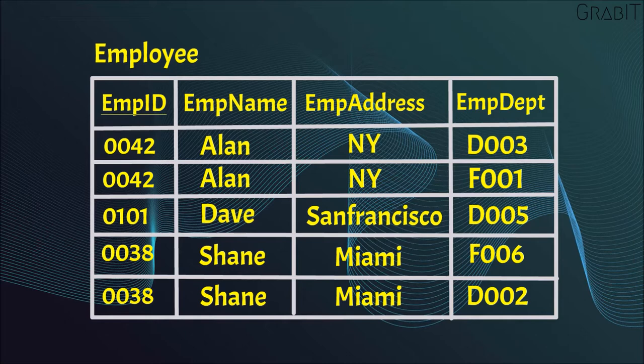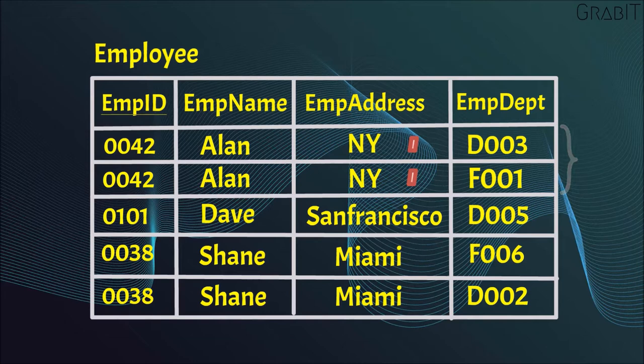Update Anomaly: In the above table, we have two rows for Employee Aaron as he belongs to two departments of the company. If we want to update the address of Aaron, then we have to update the same in both rows. Otherwise, the data will become inconsistent. If the correct address gets updated in one department but not in the other, then Aaron would have two different addresses, which isn't correct and would lead to inconsistent data.